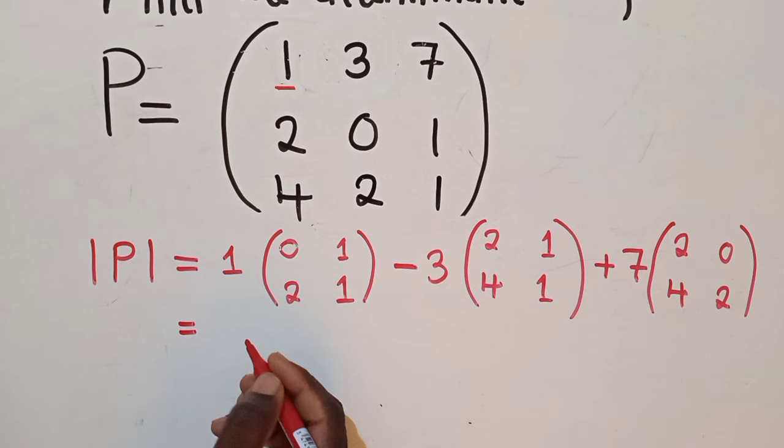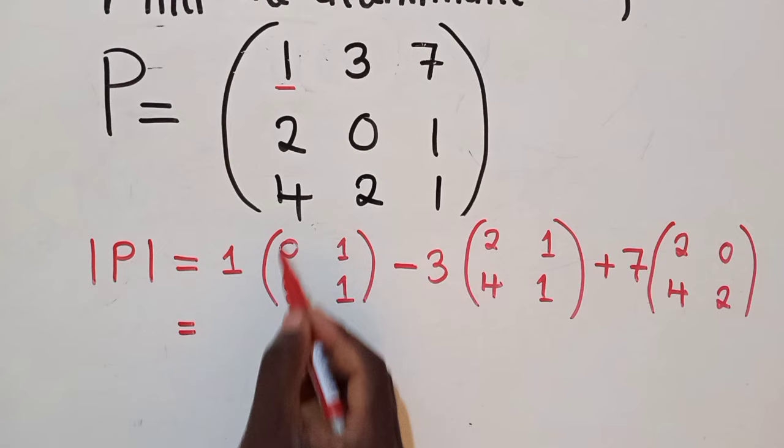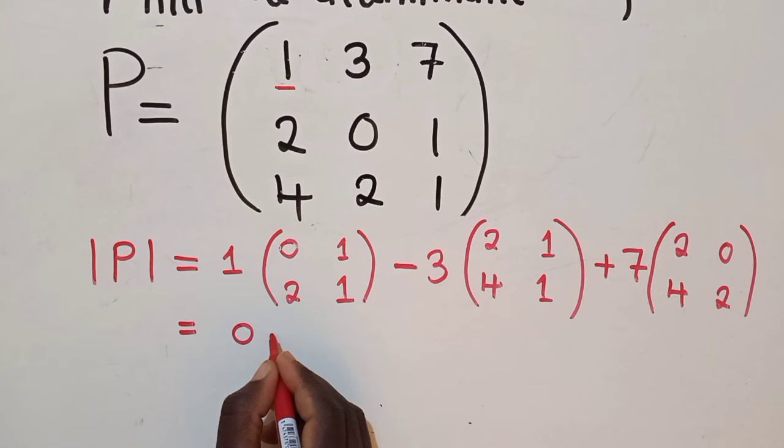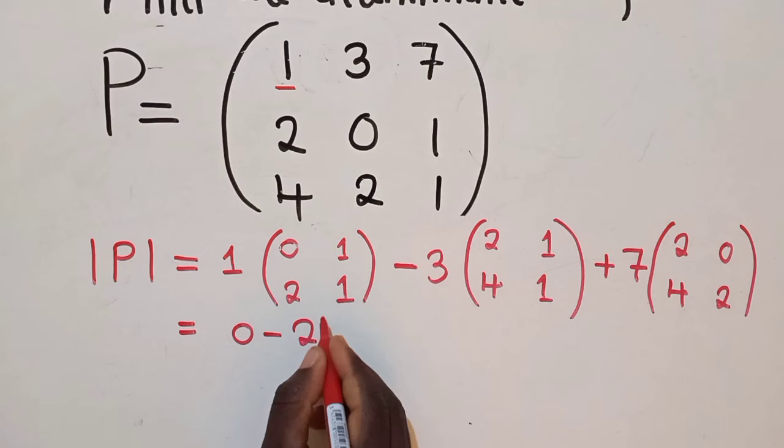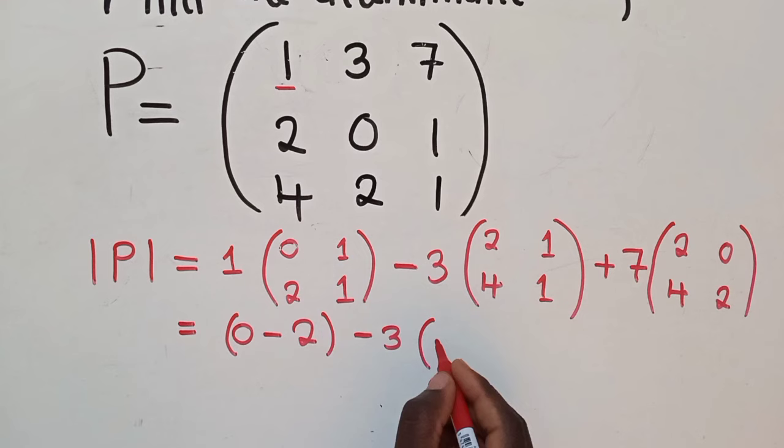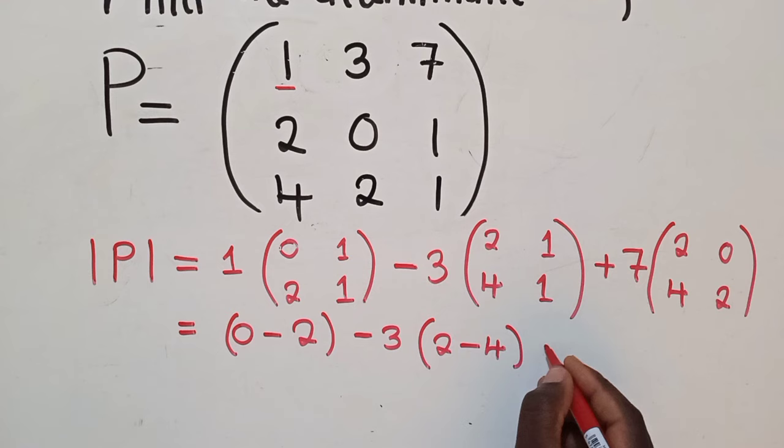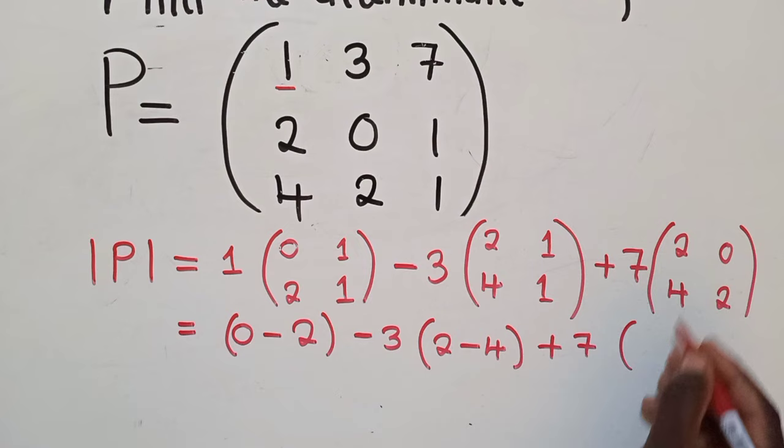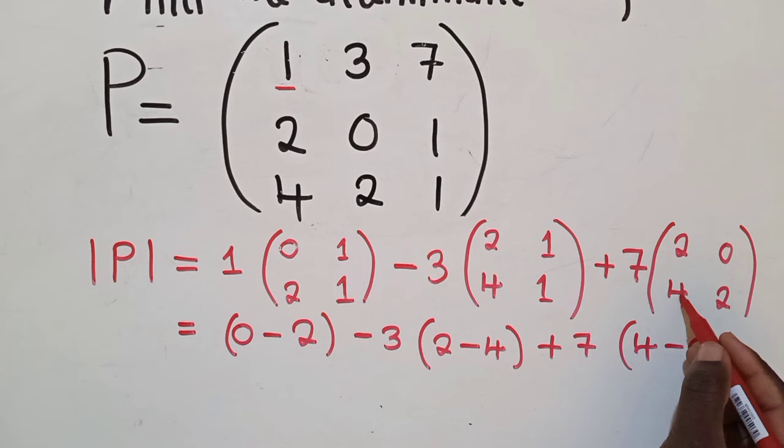So the next thing will be to start finding the determinants inside it. So the determinant of this 2 by 2 will be 0 times 1, which is equal to 0, minus 2 times 1, which gives us 2. So these are inside the brackets. And there's a 1 in front here. We say minus 3, open bracket, 2 times 1 is 2, minus 4. 4 times 1 is just 4. We say plus 7. So we shall say 2 times 2, it's 4, minus 0. Because 4 times 0 is just 0.